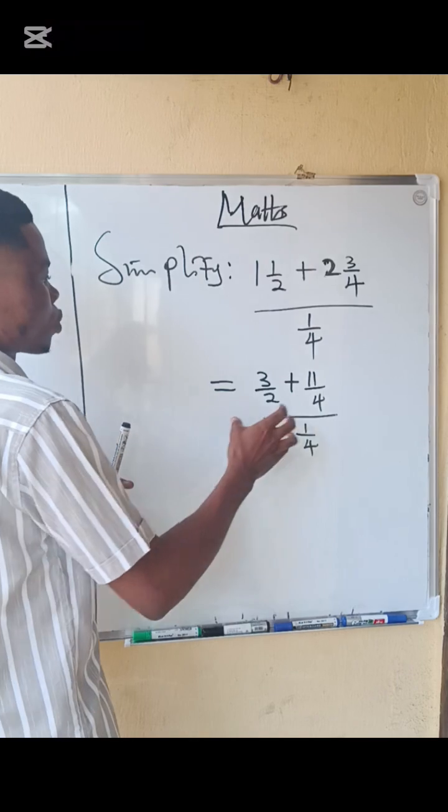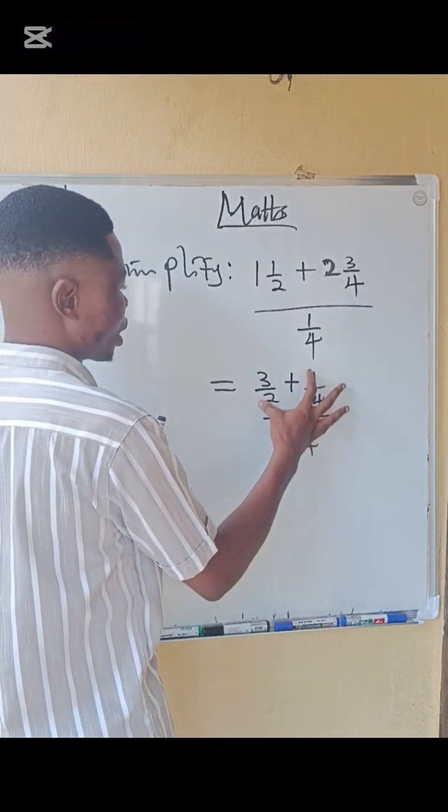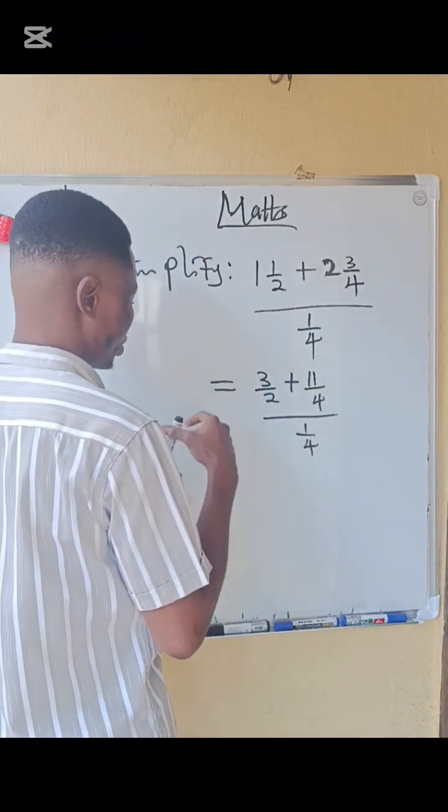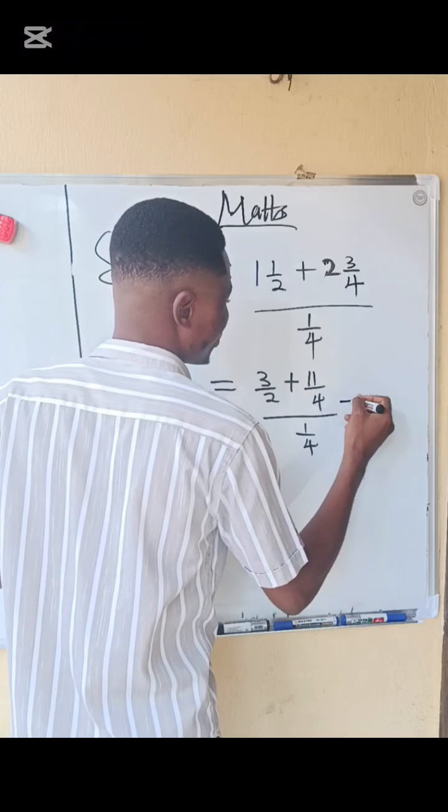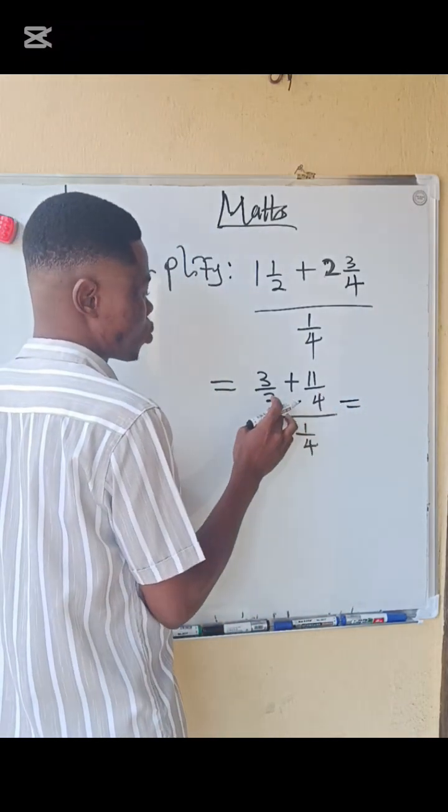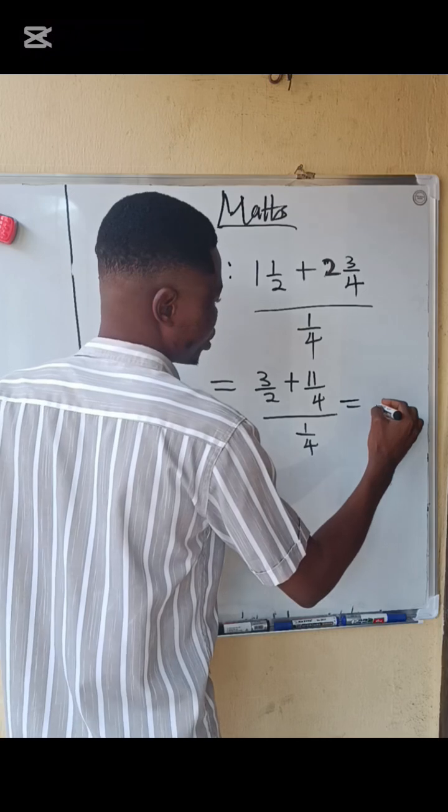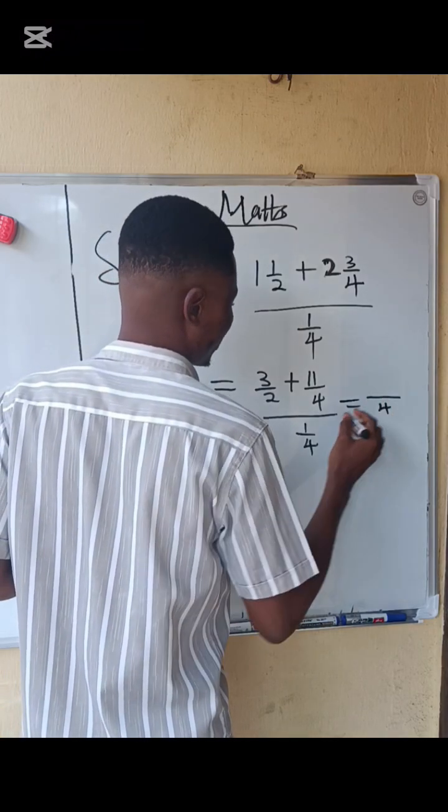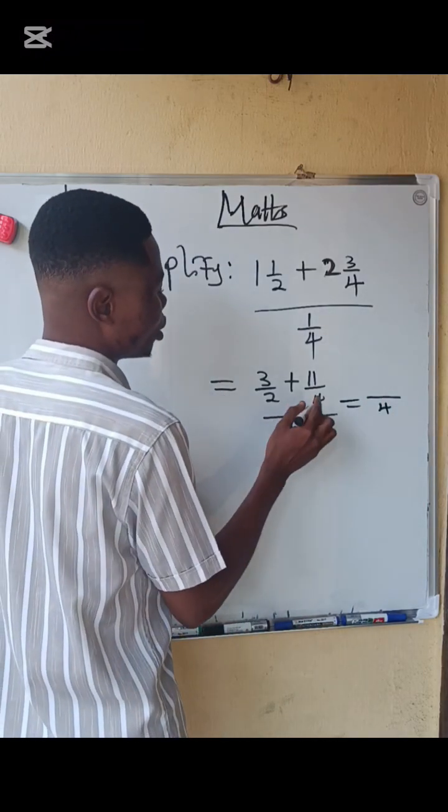We have to add this fraction here. So what do we do here? Find the LCM. The LCM of 4 and 2 is 4, so we write it here, 4. So let's see then.